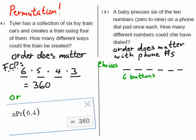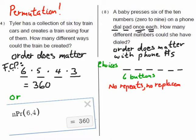The baby presses each digit only once — once she touches the one, she doesn't touch it again. So let's count using the fundamental counting principle. It says no repeats, which means no replacing.